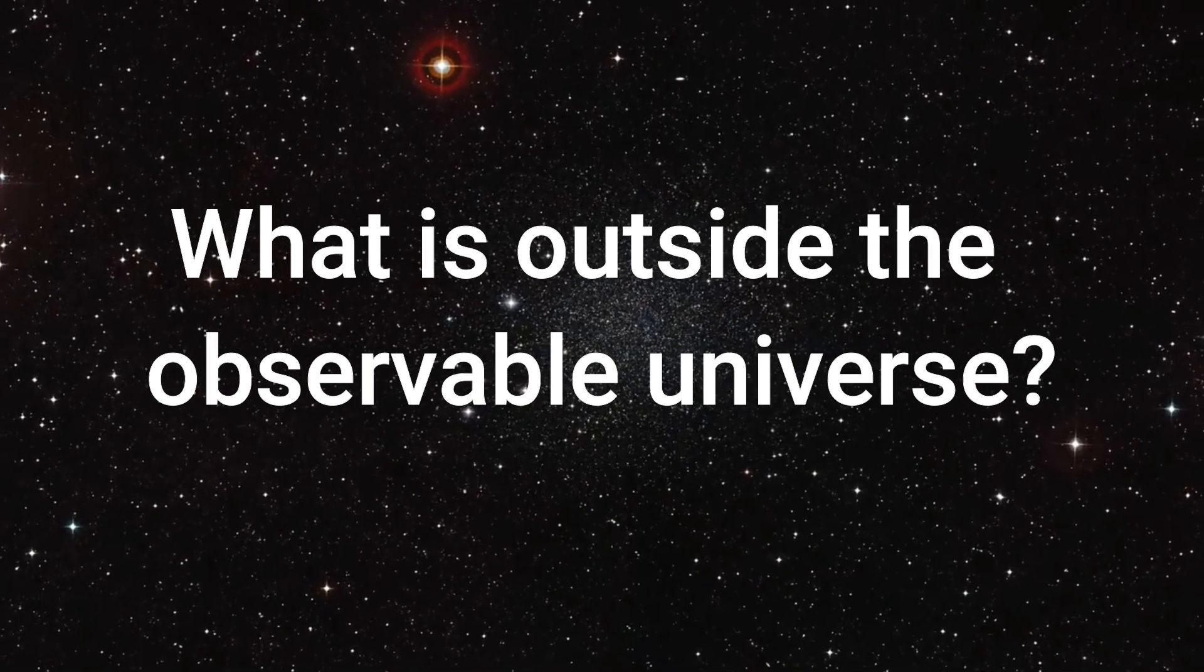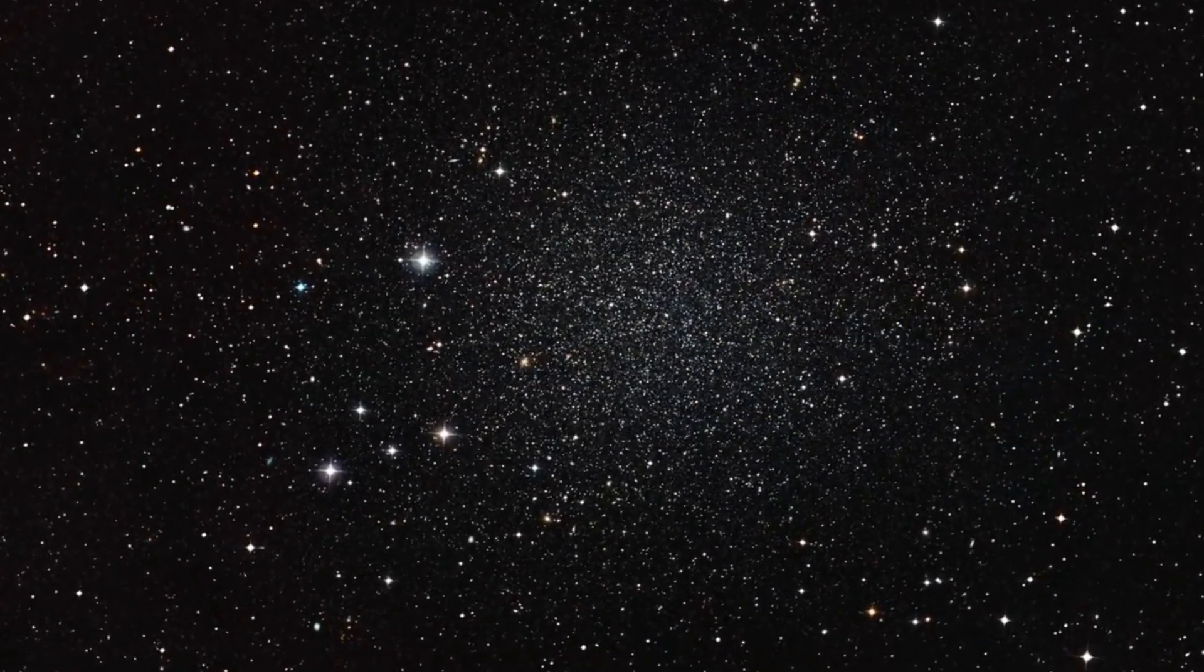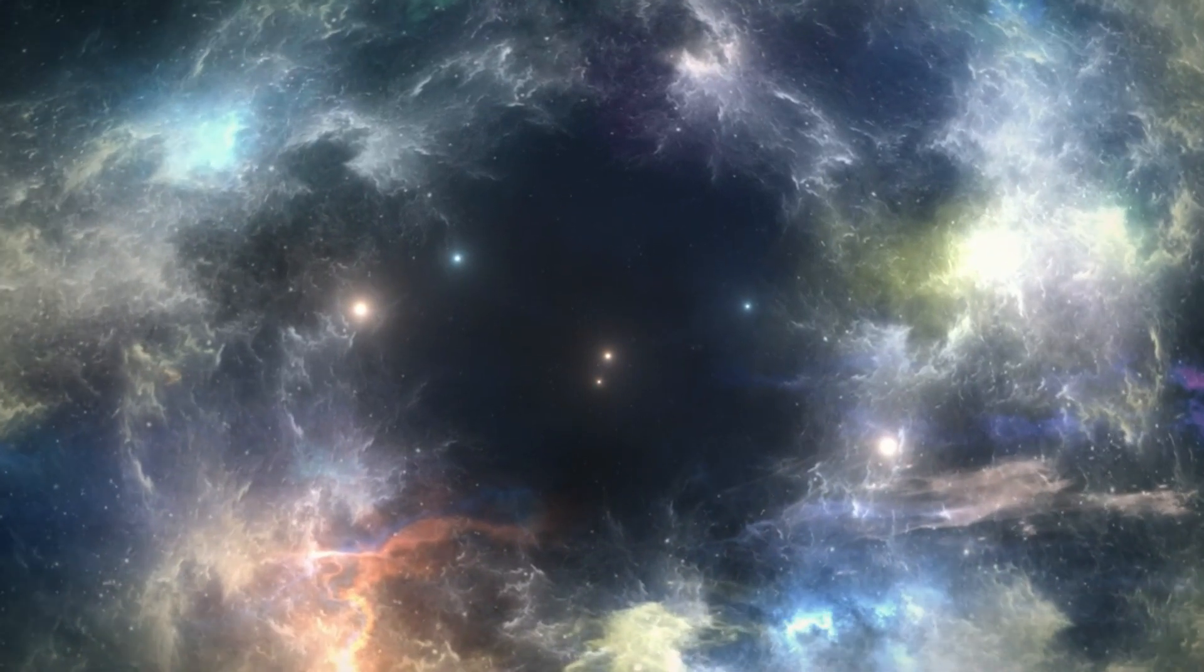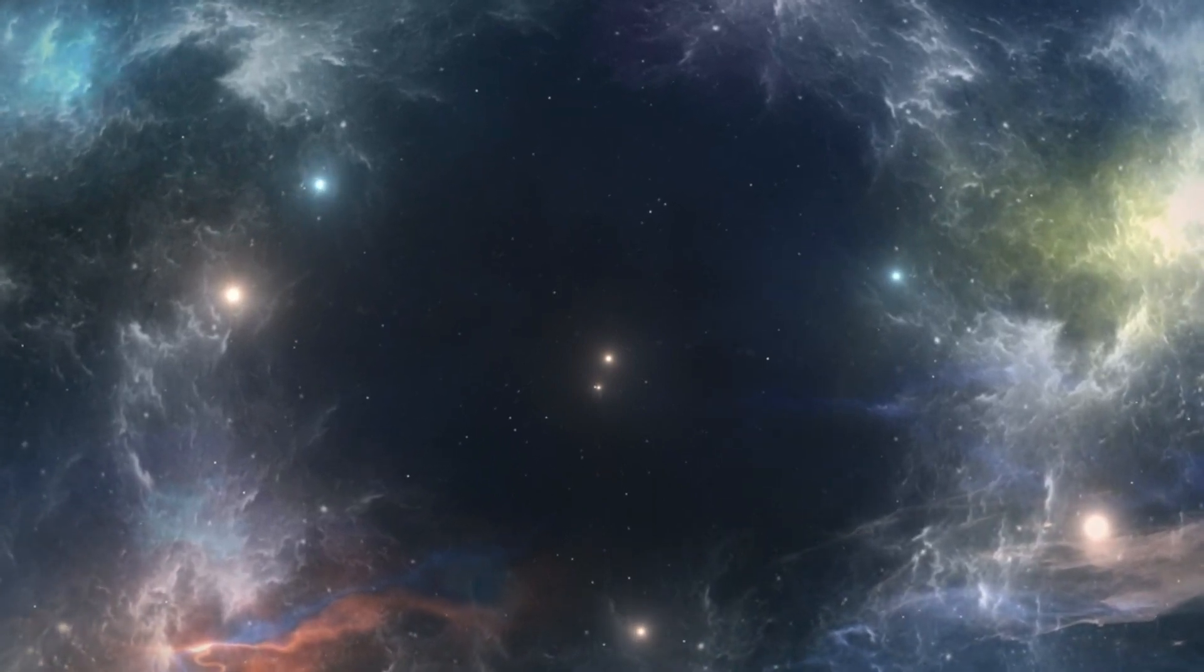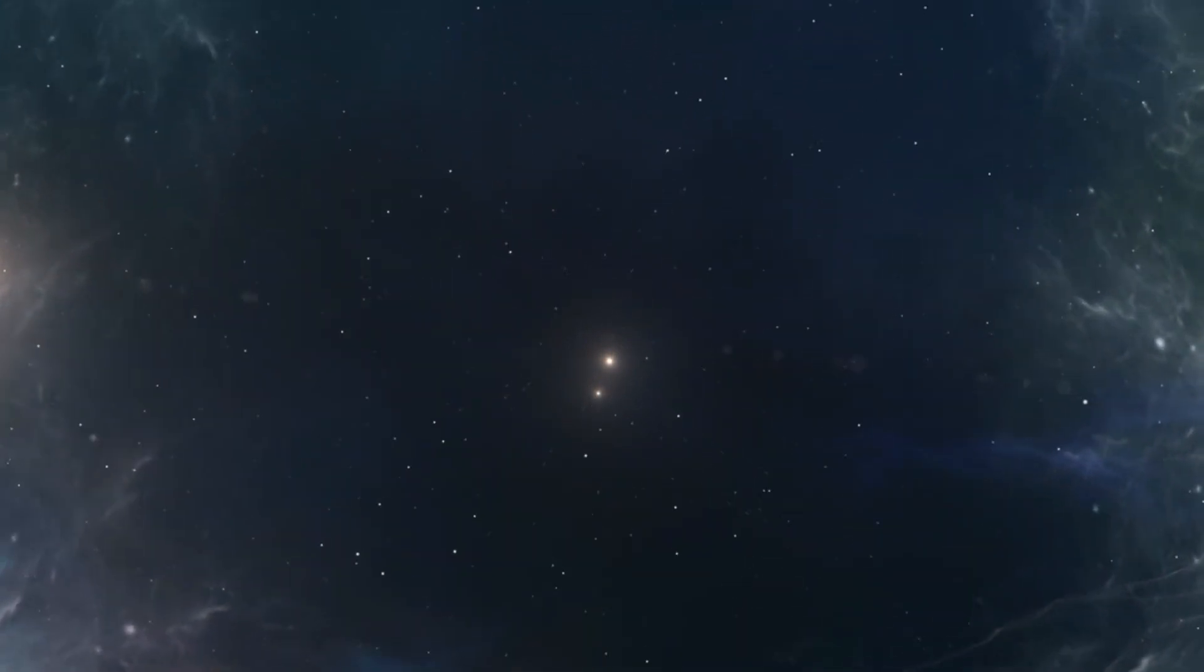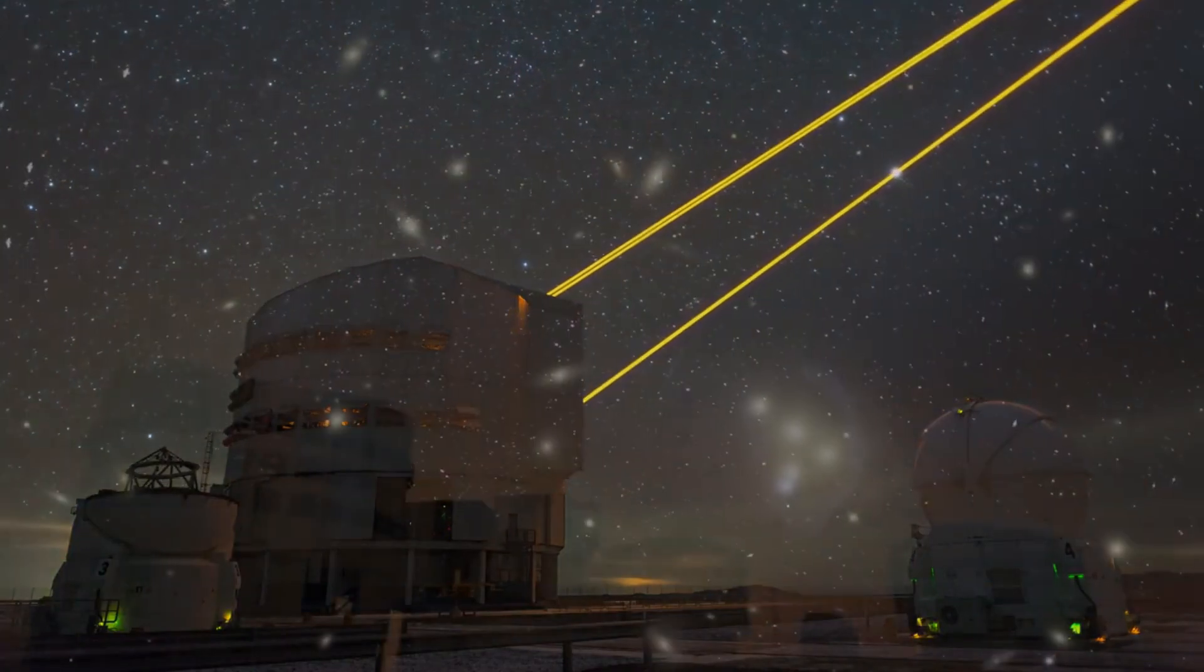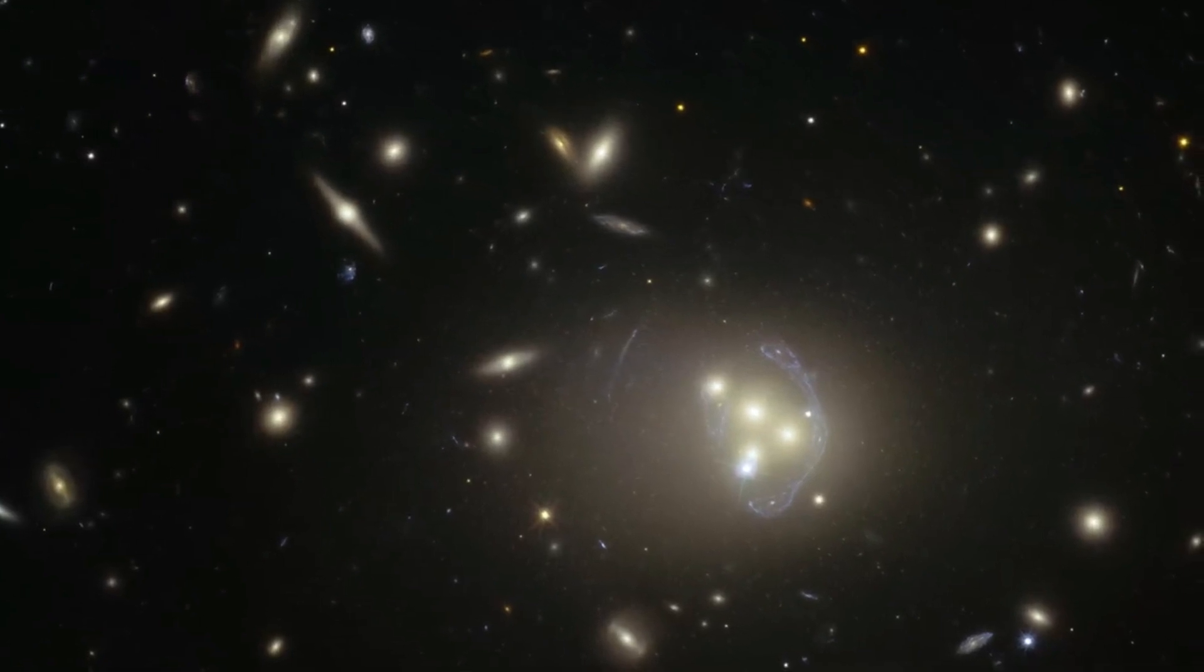The observable universe is a term used to describe the portion of the universe that is visible to us from Earth. This region of space is limited by the speed of light and the age of the universe, and is estimated to be approximately 93 billion light years in diameter. However, there may be parts of the universe that are beyond the observable universe which we are unable to see or detect using current technology. In this video, we will explore some of the theories and ideas about what might exist beyond the observable universe.